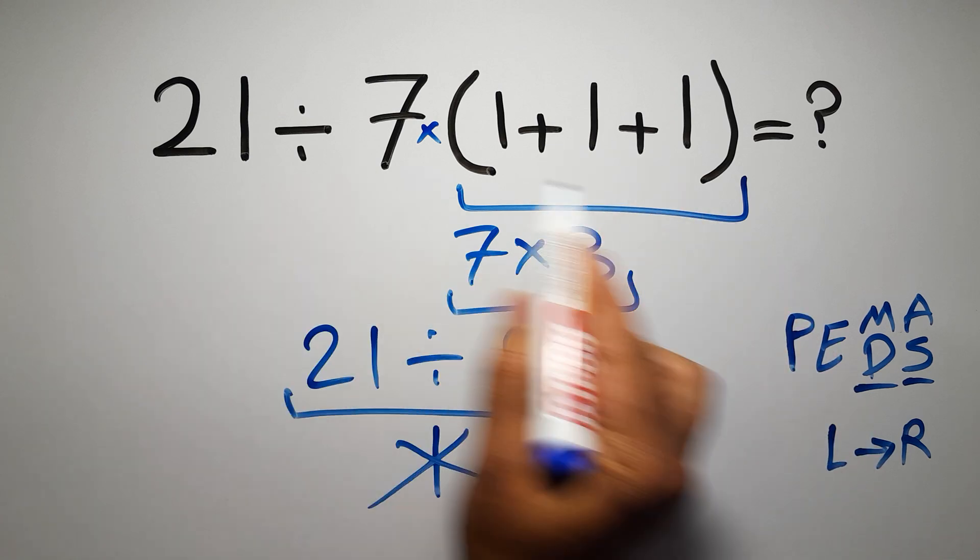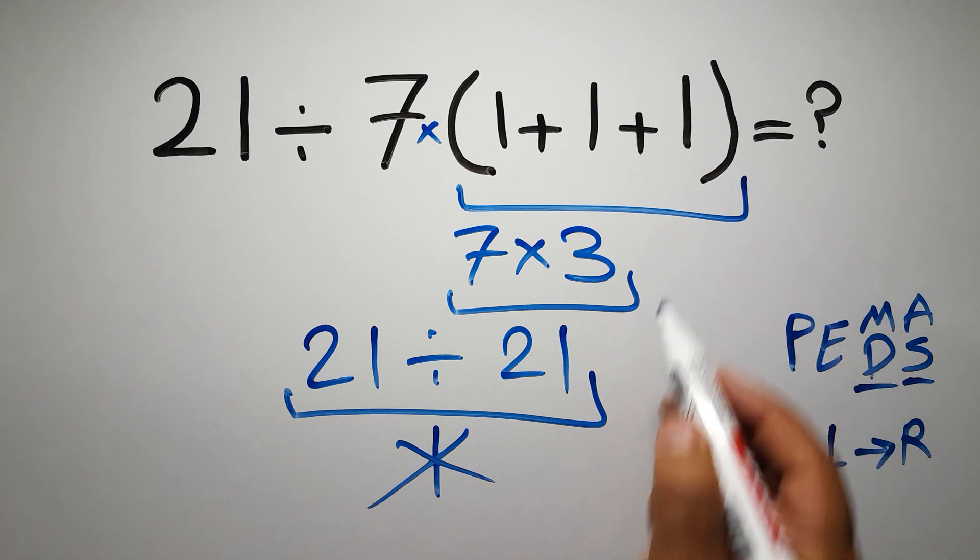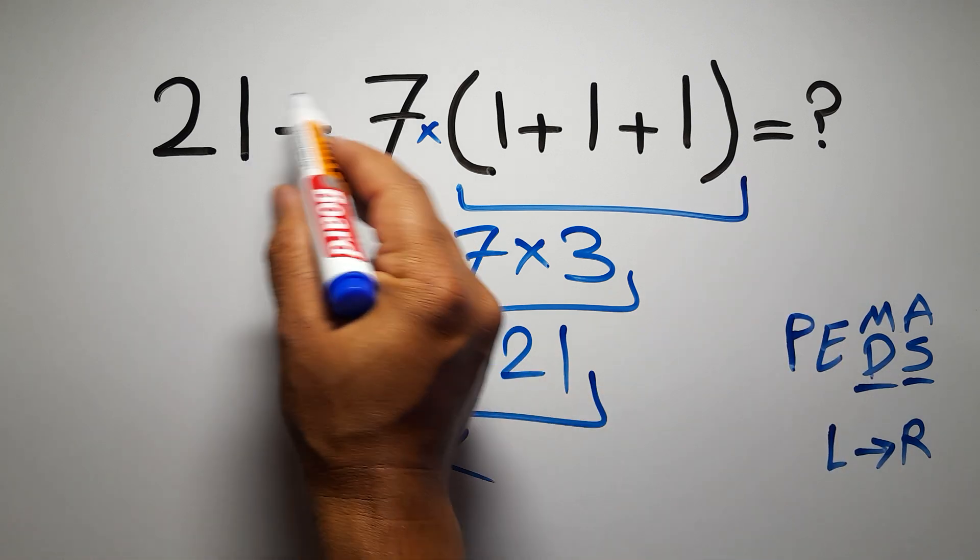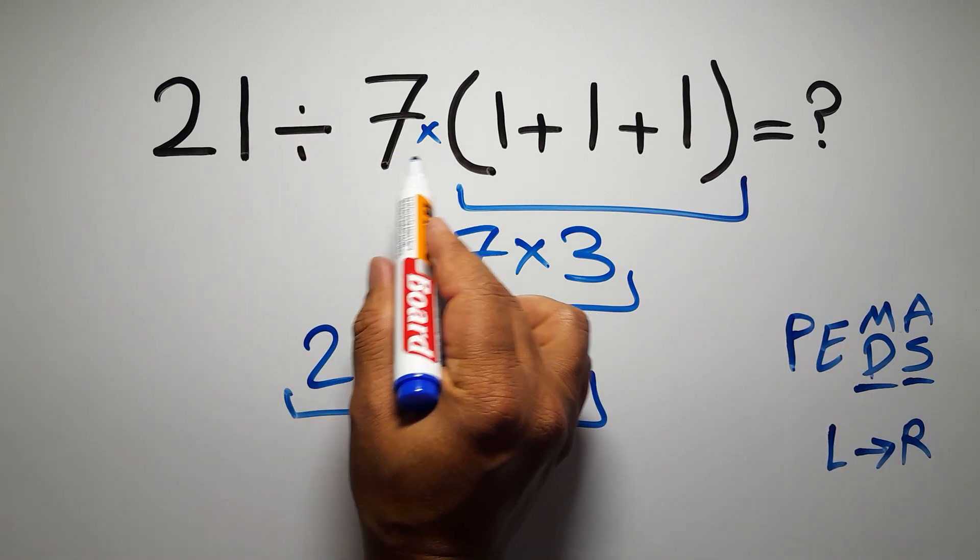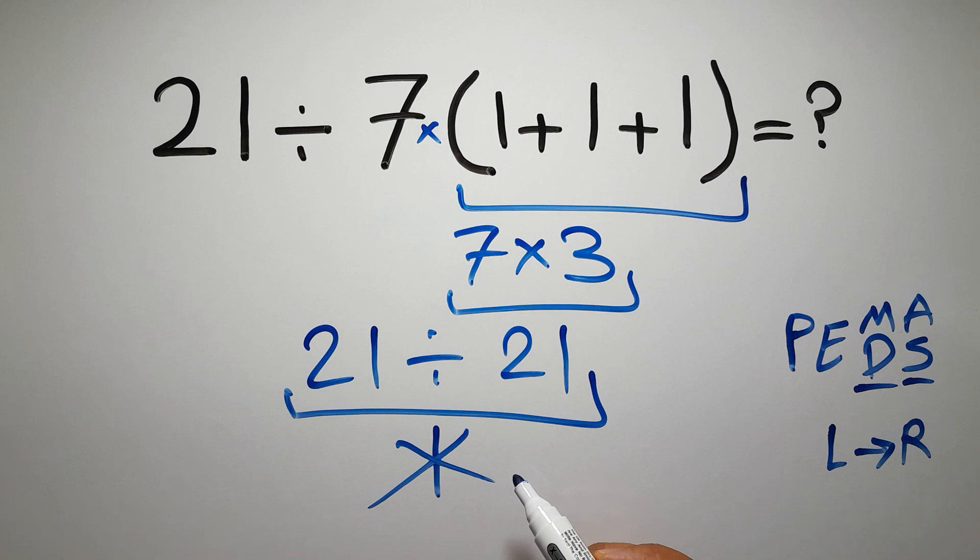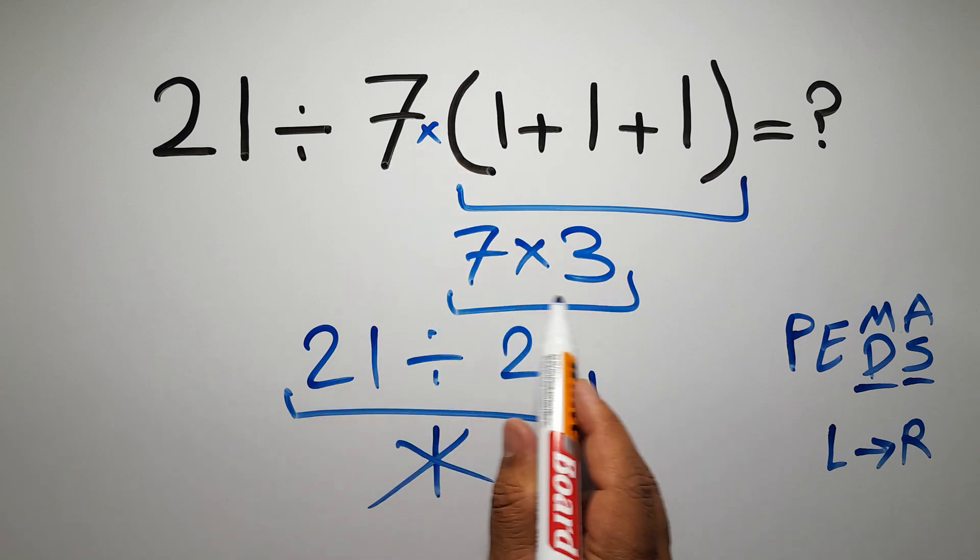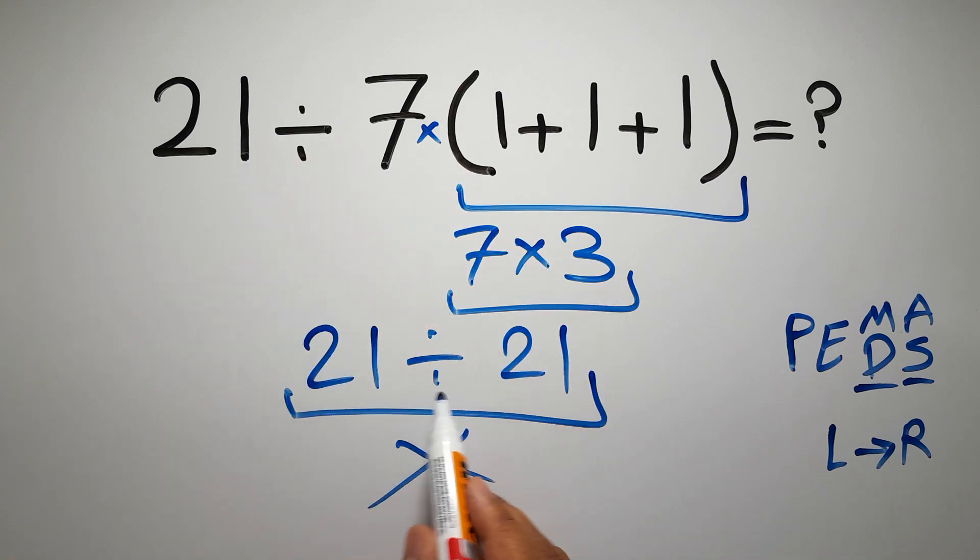So here, according to the PEMDAS, first we have to do these parentheses, then this division, and finally this multiplication. If we do this multiplication before this division, it is wrong.